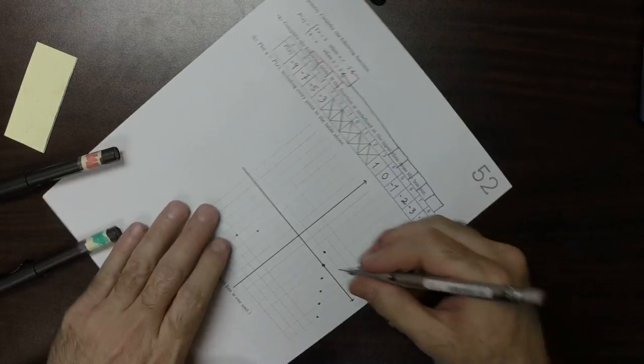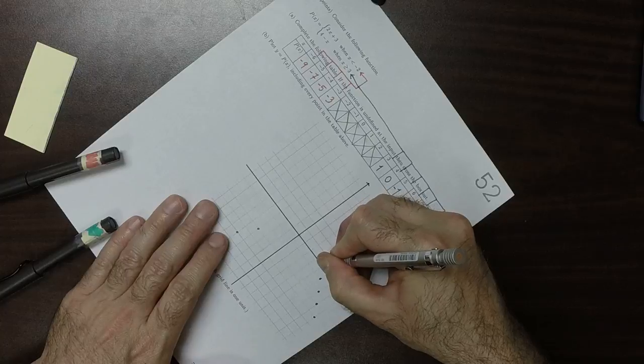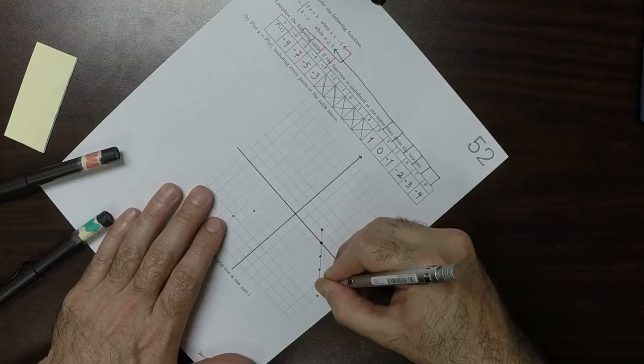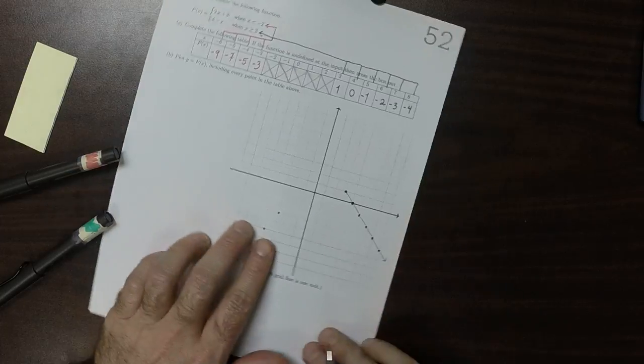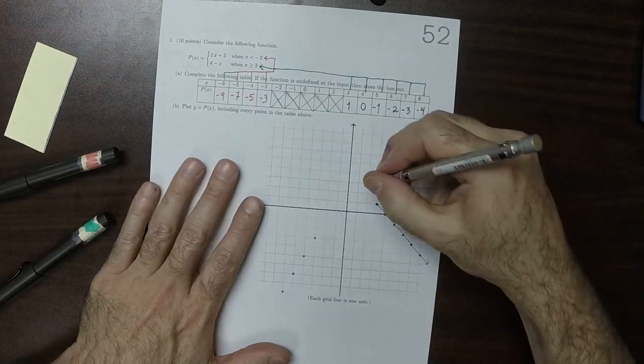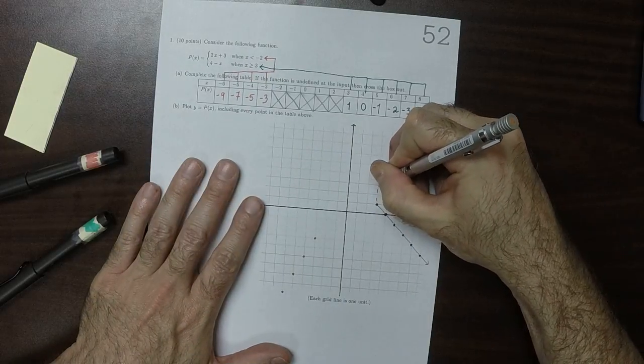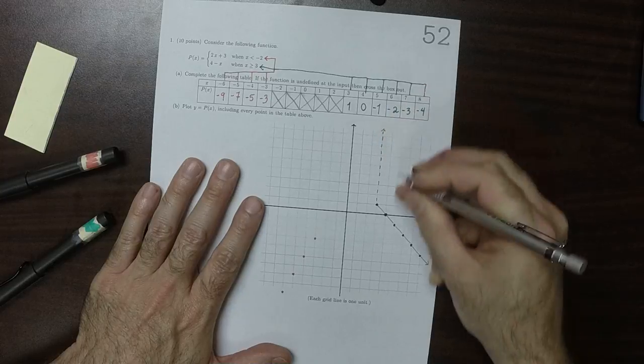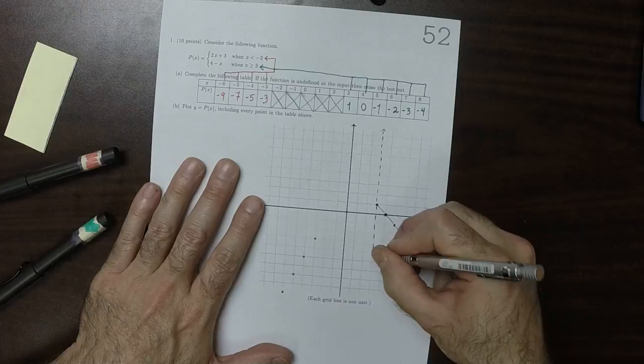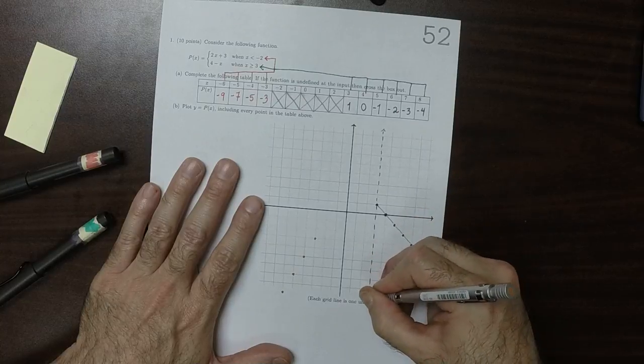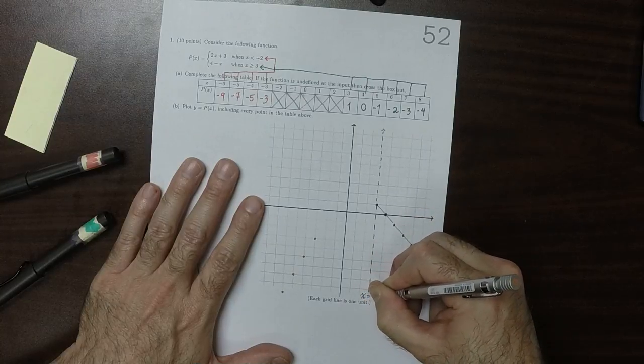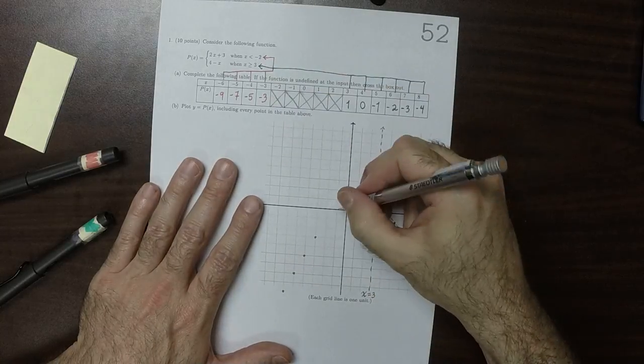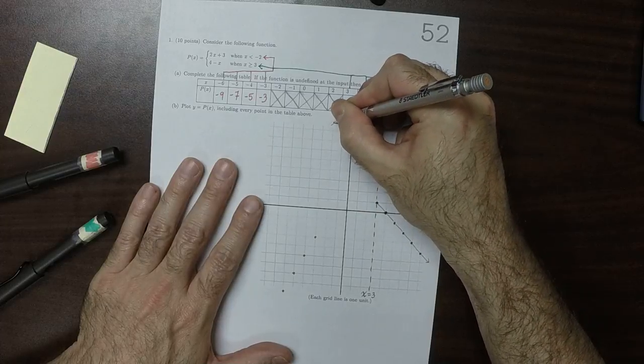So now we need to connect the dots. All the green dots can be connected. And the boundary of the green is x greater or equal to 3. So here's x equal to 3. And then the boundary of the red dots is negative 2.